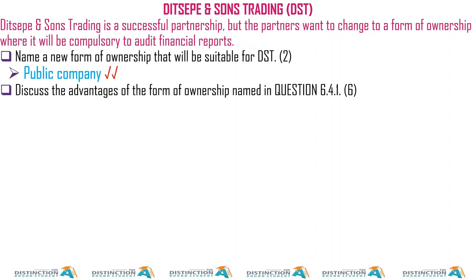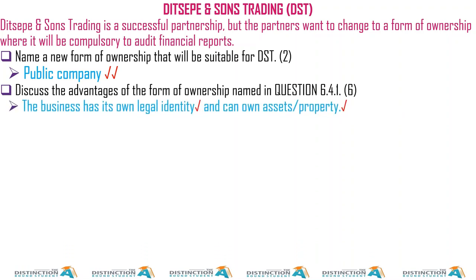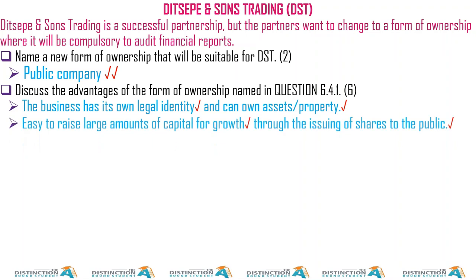DTB and SANS Trading is a successful partnership, but the partners want to change to a form of ownership where it will be compulsory to audit financial reports. The new form of ownership suitable for them is a public company — because of what they're saying about compulsory audits, as audits are compulsory for a public company.